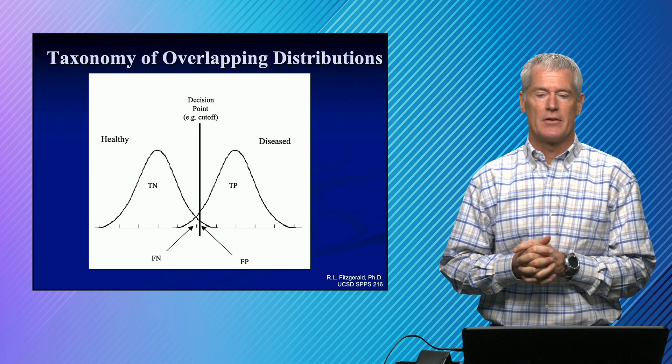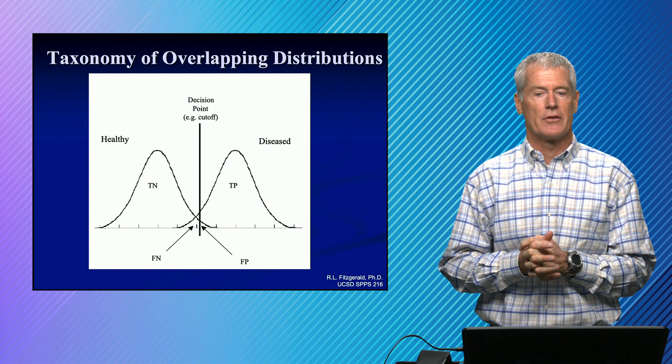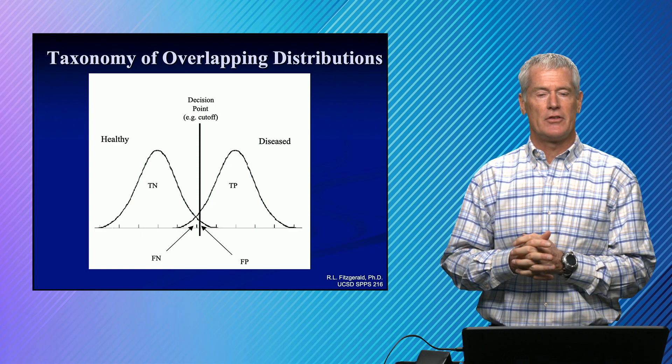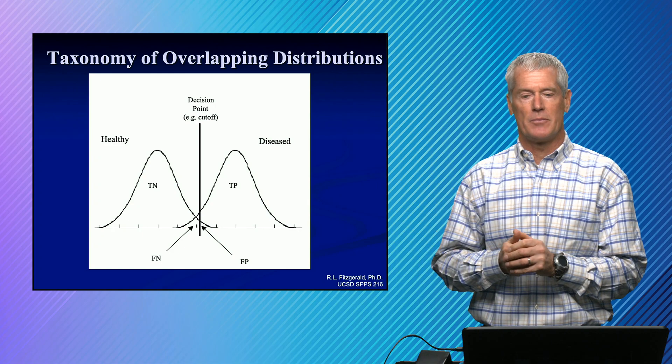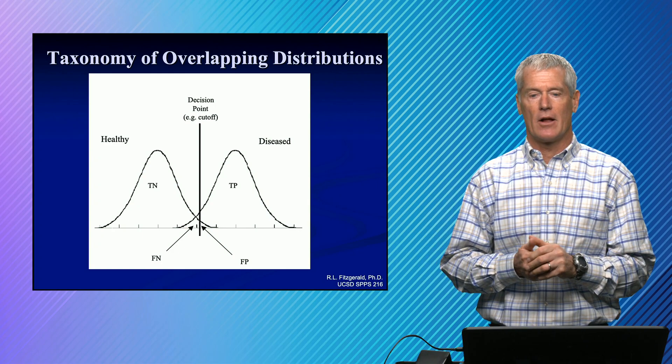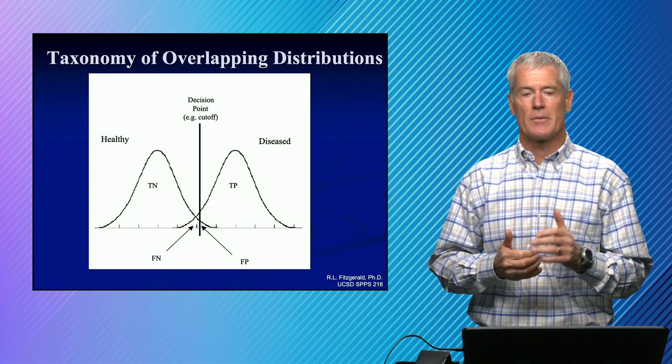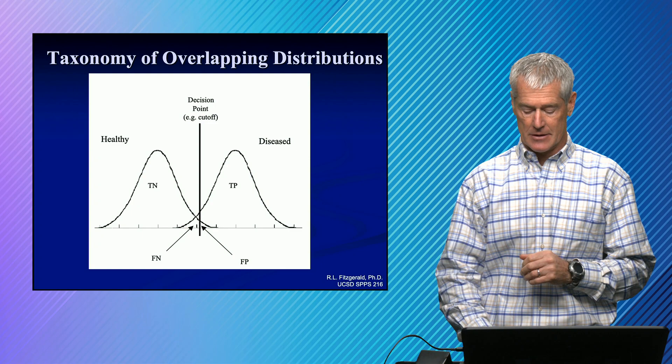We classify the different parts of this underneath these curves based on the decision point as true positives. That's the disease state, someone who is diseased and is correctly classified as being elevated. True negatives are healthy that are classified as being healthy. A false positive would be someone who is healthy, but is classified by the test as being a positive result.